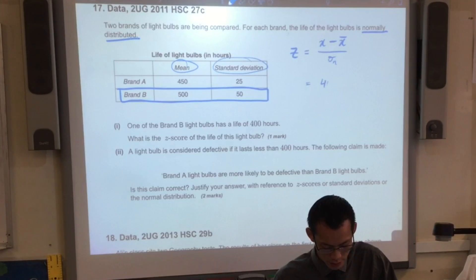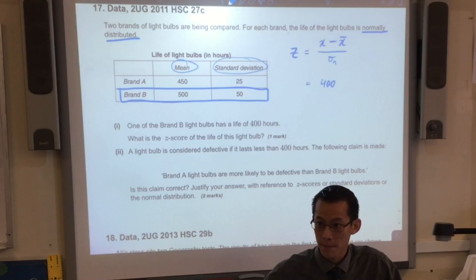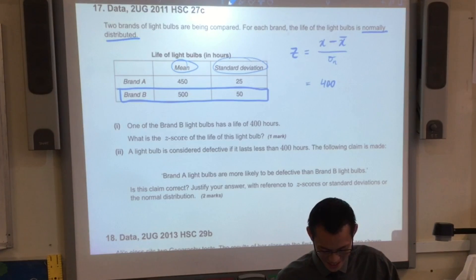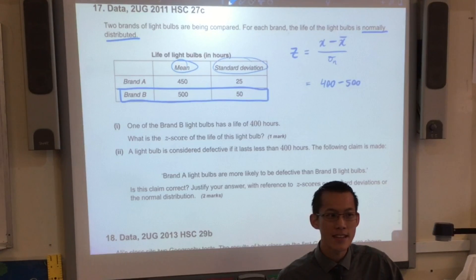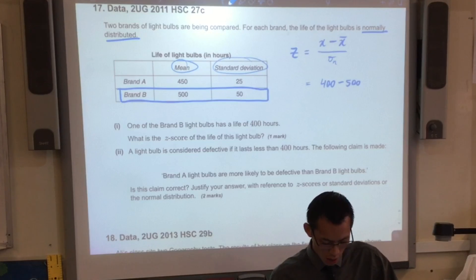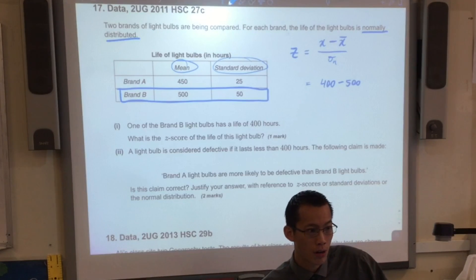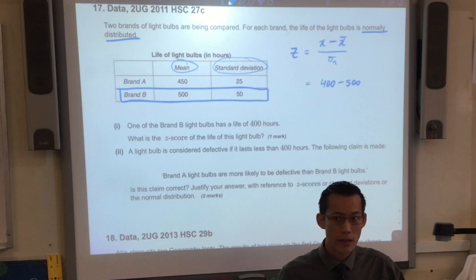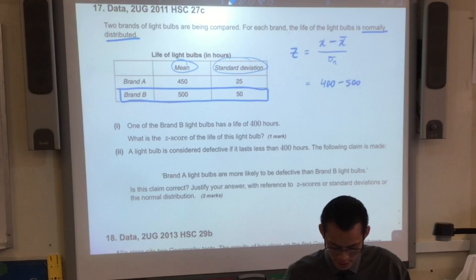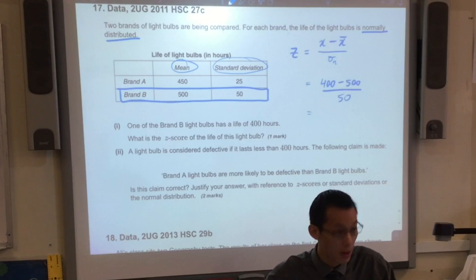We can really quickly work out what this specific Z-score is. You said it was 400, that was the specific score. What's the mean? Look carefully, we're in brand B, so it's going to be 500. Now, immediately you know, and it should make sense to you, oh, I'm going to have a negative Z-score there, and that's because it's less than the average. It's below the average, right? Then I'm going to divide by 50. On the numerator, I'm pretty sure that's negative 100. Negative 100 divided by 50 is negative 2. So I have the Z-score for that particular light bulb.